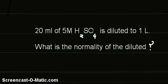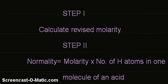20 ml of 5 molar H2SO4 is diluted to 1 liter. Step 1: Calculate revised molarity and then find the normality.